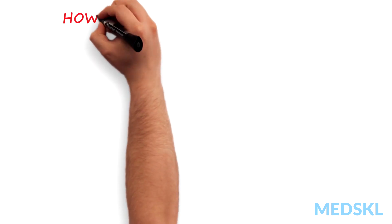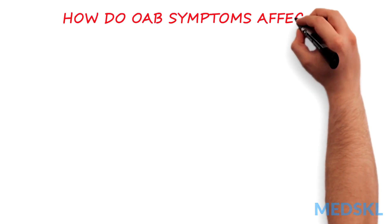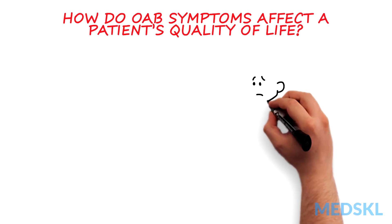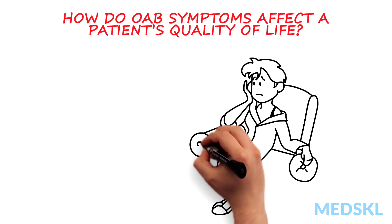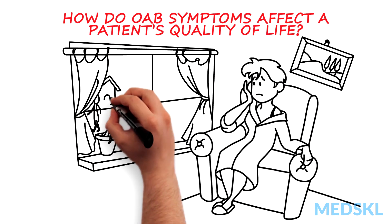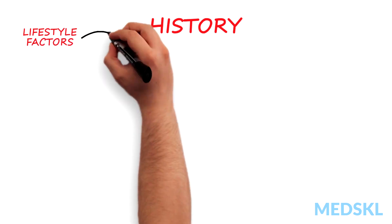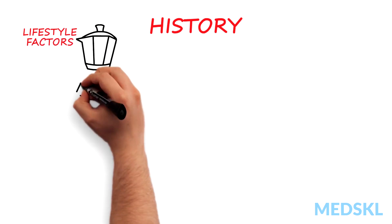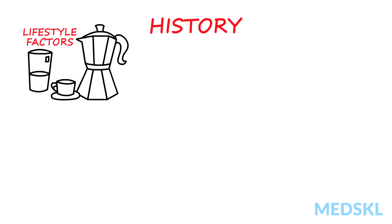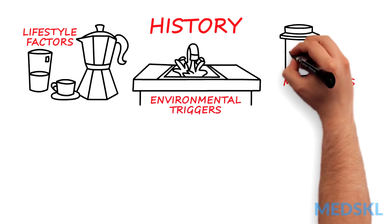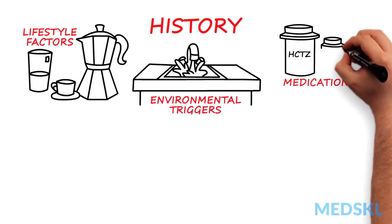It is important to delineate how OAB symptoms affect a patient's quality of life. Women with OAB are often socially isolated and sleep poorly. On history, pay attention to lifestyle factors such as caffeine and fluid intake, environmental triggers, and medications that may worsen symptoms like diuretics.